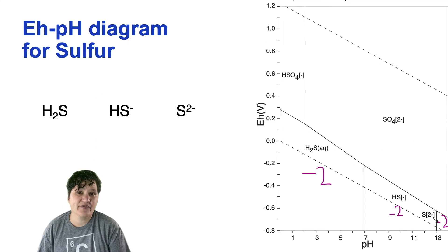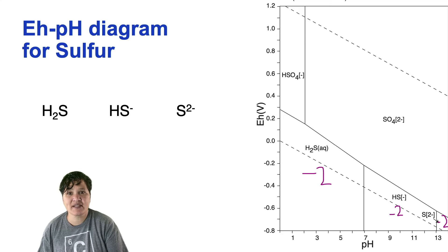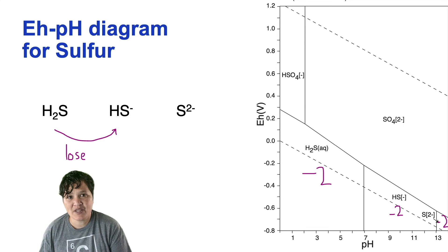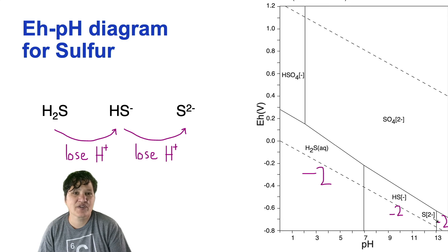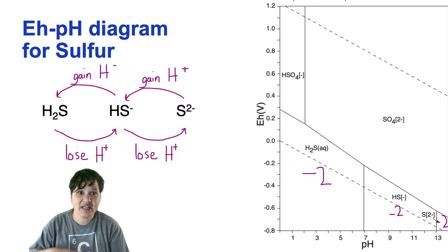You can see the same sort of pattern if you look at the species with the minus 2 oxidation numbers. Going from H2S to HS-, which involves moving from left to right on the graph, or acidic to basic, you lose an H+ ion. Going from HS- to S2-, you lose another H+. Or you could decide to go from right to left. From more basic to more acidic, you start gaining H+ ions.